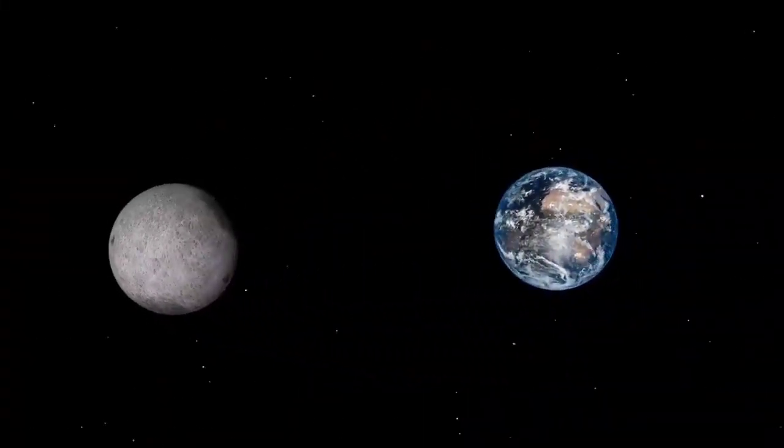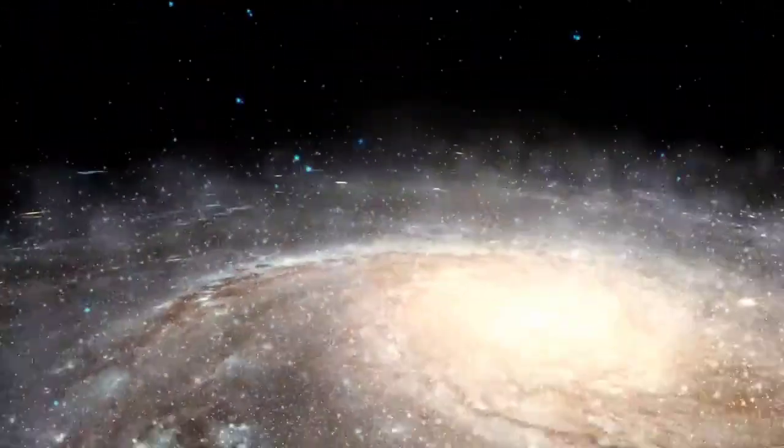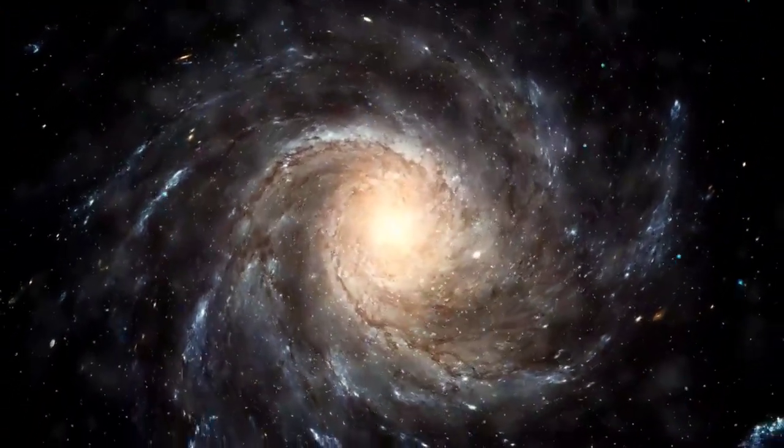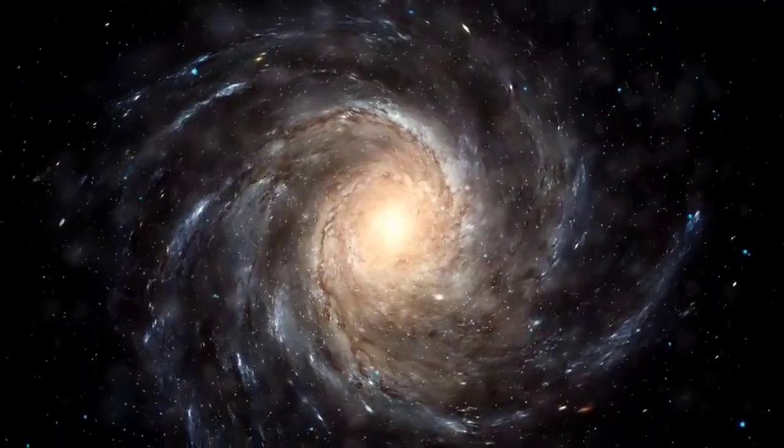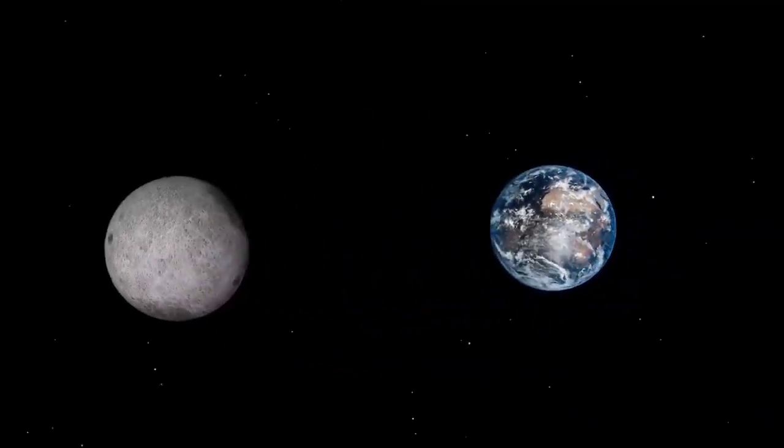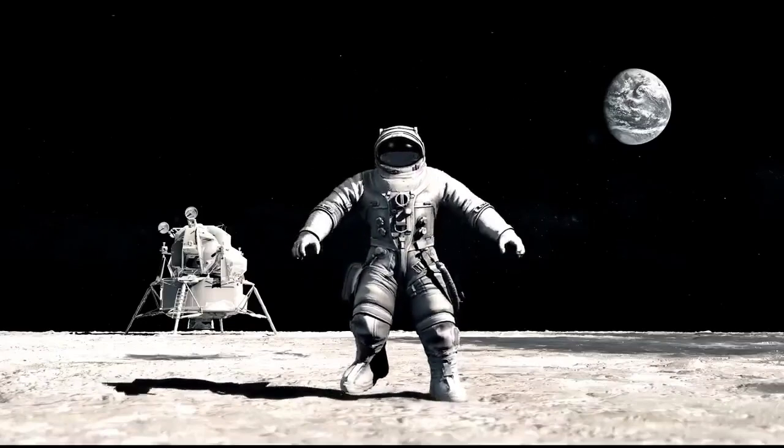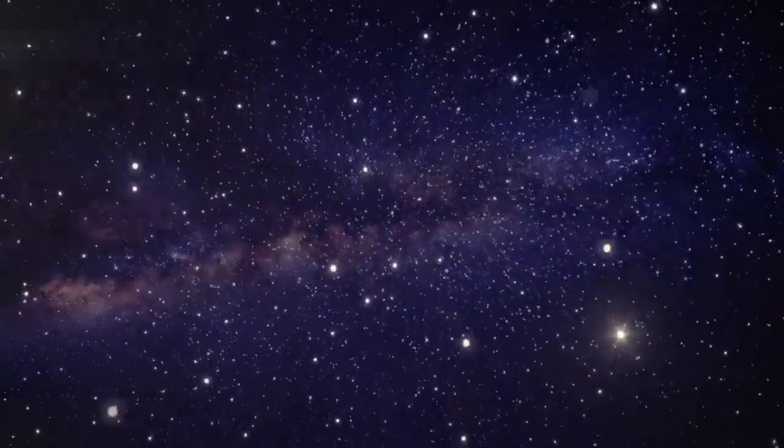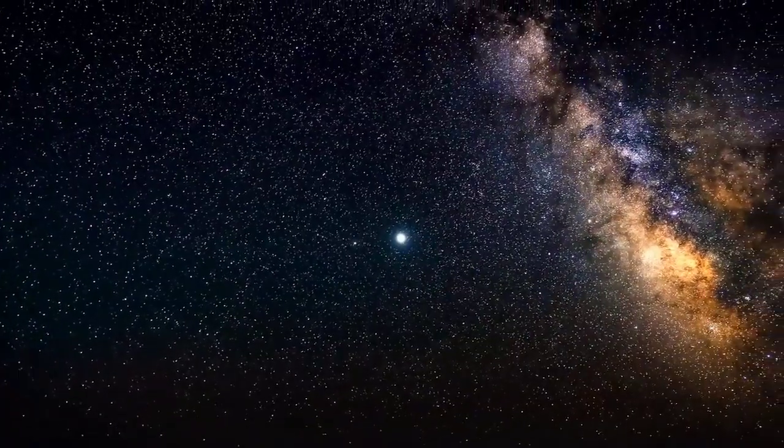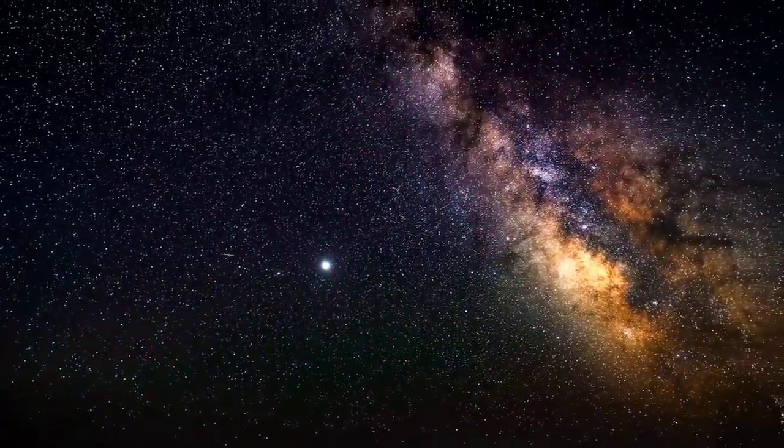At night, when that part of Earth is facing away from the sun, space looks black because there is no nearby bright source of light like the sun to be scattered. If you were on the moon or any other planet which has no atmosphere, their sky would remain black in both day and night.